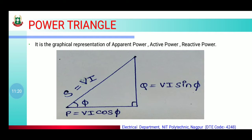Power triangle is the graphical representation of apparent power, active power, and reactive power. जैसे impedance triangle देखा है, same वैसे ही power triangle रहेगा। Hypotenuse हमेशा apparent power S = VI होगा, opposite side reactive power Q = VI sinφ होगा, और adjacent side active power P = VI cosφ होगा।